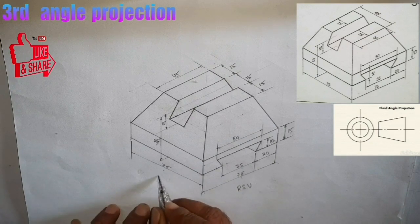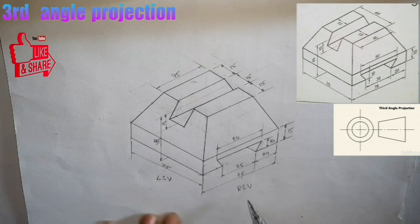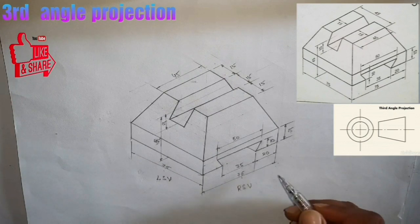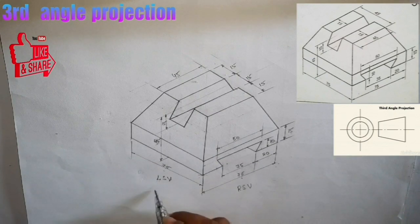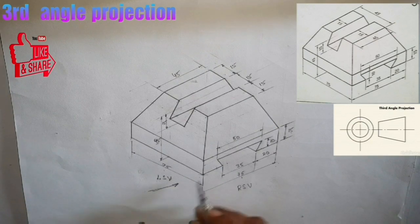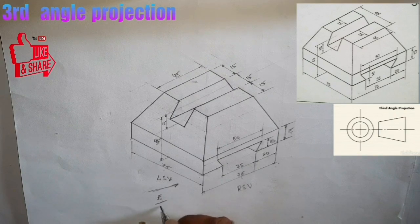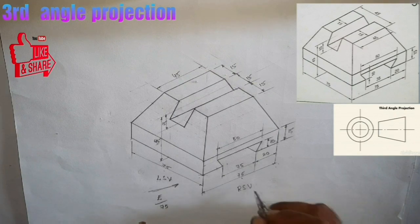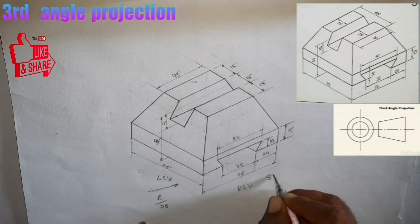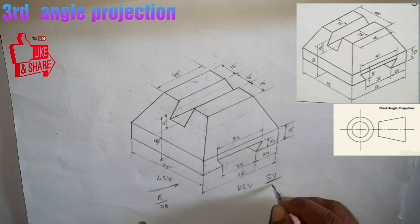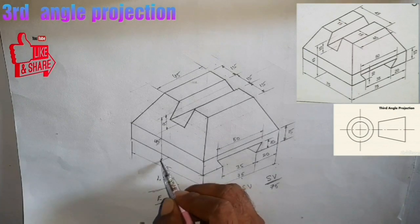Third Angle Projection — first, I will choose the right side view and left side view. The left side view is placed on the left side and the right side view is placed on the right side. I choose the left side view.